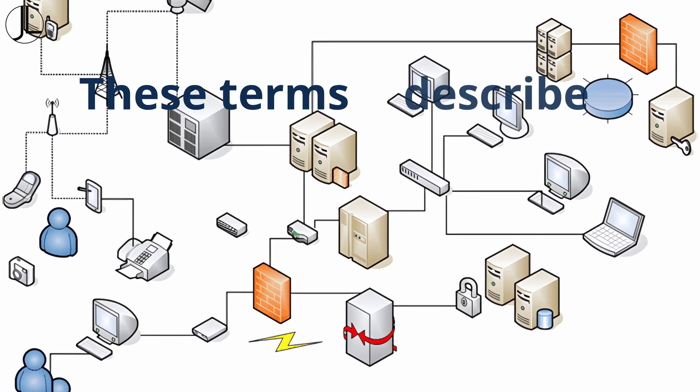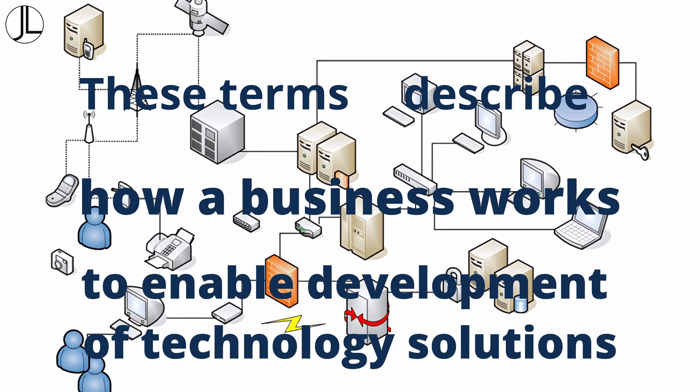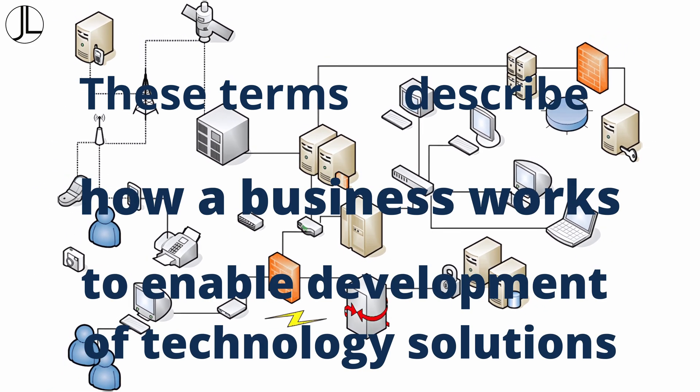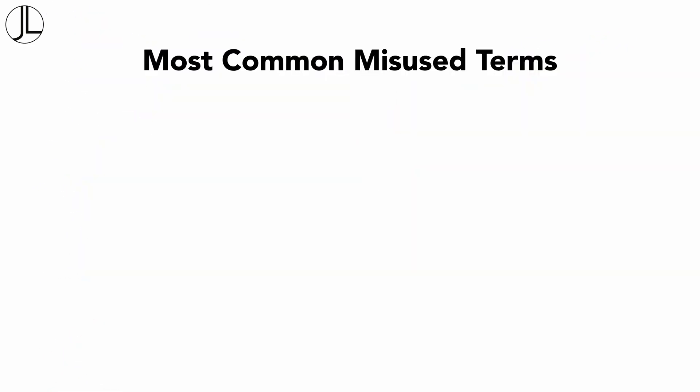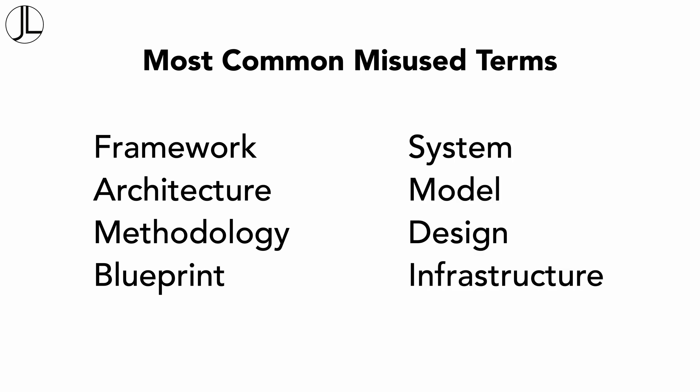These are terms that describe and translate how business works to build technology solutions. The most common misused terms in my experience are framework, architecture, methodology, and blueprint. But I've also included another four that are also sometimes misunderstood, which are system, model, design, and infrastructure.